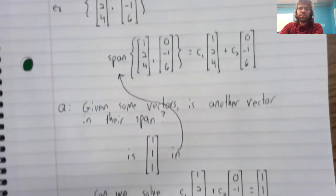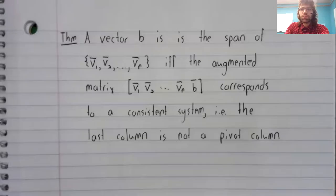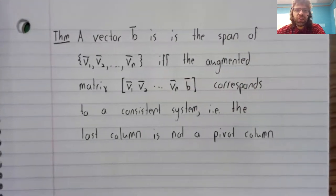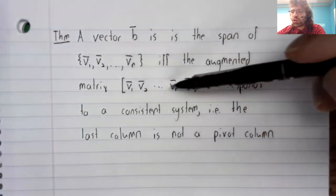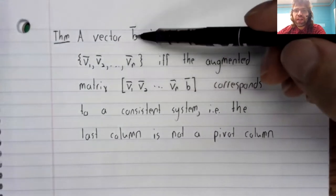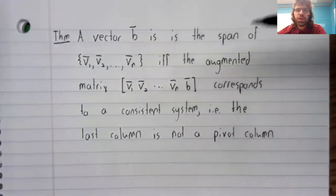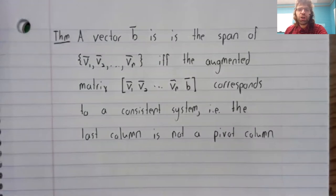We can state this as a theorem: a vector b is in the span of a set of vectors if and only if the augmented matrix with these vectors as columns and this vector as the last column corresponds to a consistent system. That is to say, the last column is not a pivot column.